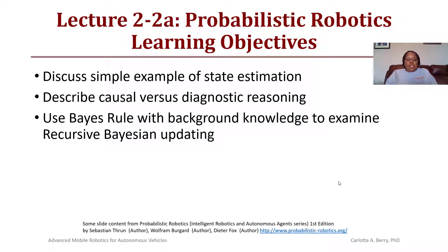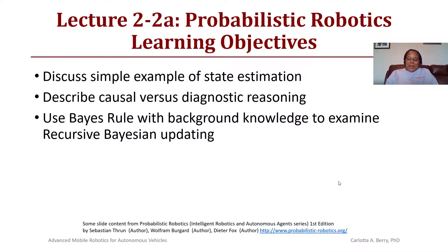Please note that some of the slide content, as well as the course content, comes from Probabilistic Robotics, an Intelligent Robotics and Autonomous Agents series by Sebastian Thrun, Wolfram Burgard, and Dieter Fox. To find out more about their work, please visit probabilisticrobotics.org.